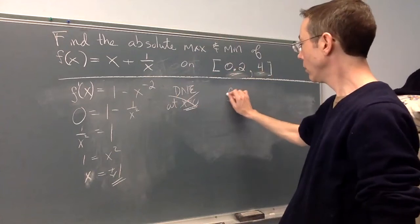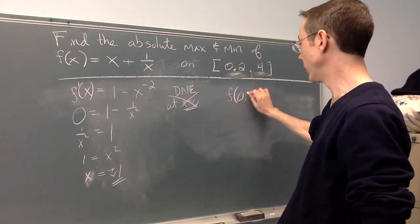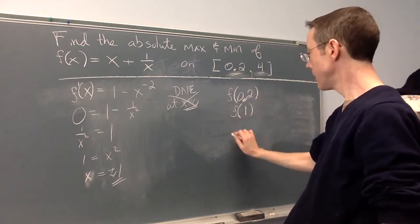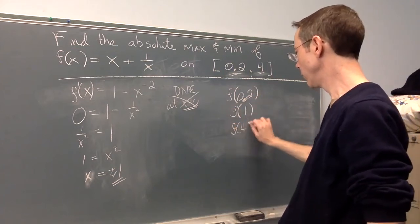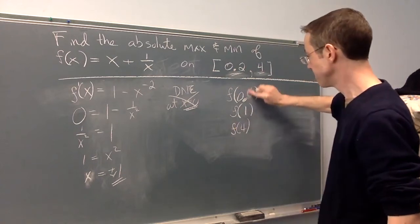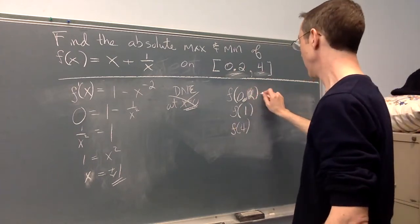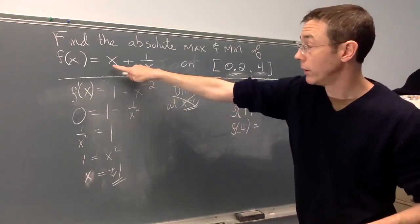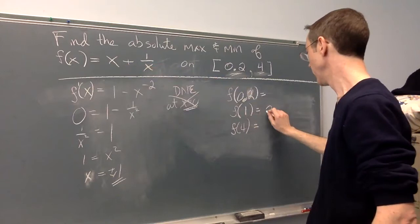So overall we're going to need f(0.2), f(1), and f(4). f(1) is the easy one. f(1) = 1 + 1, or 2.